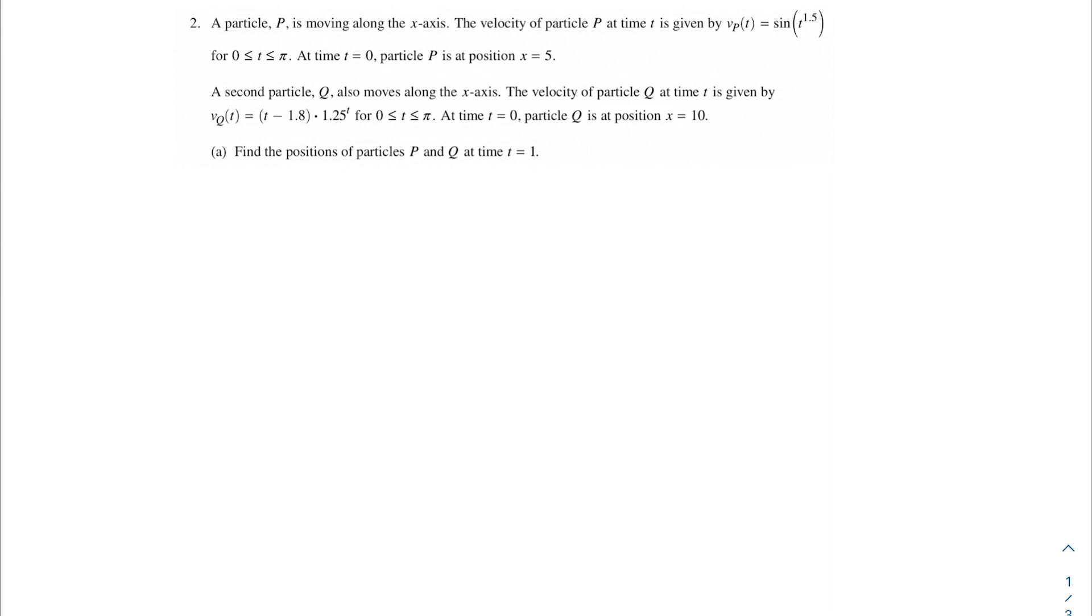This problem says a particle P is moving along the x-axis. The velocity of particle P at time t is given by V_P(t), which is sine of t to the 1.5 power, for t is between 0 and pi. At time t equals 0, particle P is at position x equals 5.